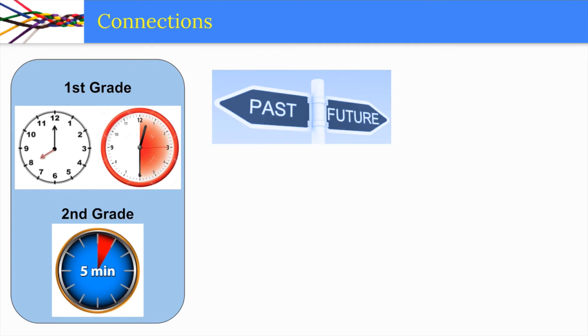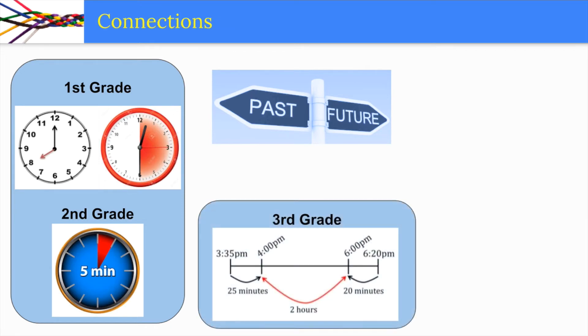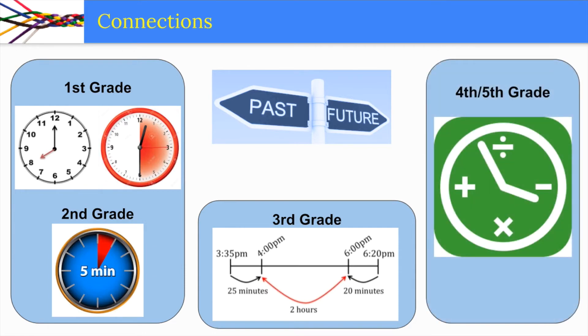This year, students will work with precision to measure time to the exact minute and use a number line to find the time between events. In fourth and fifth grade, students do not work with time specifically but will encounter problems that will require them to use what they have learned about time in previous grades.